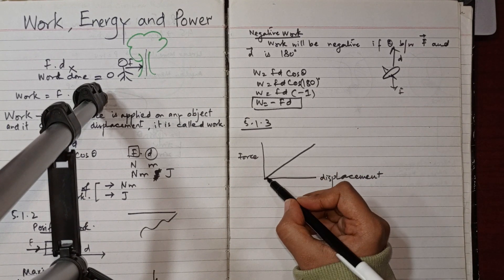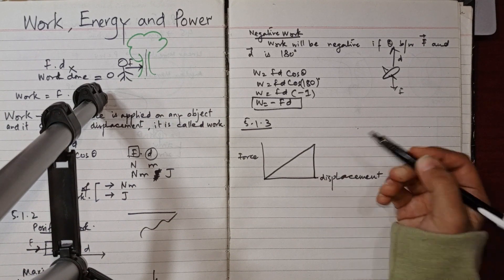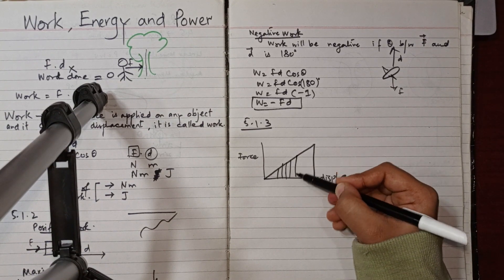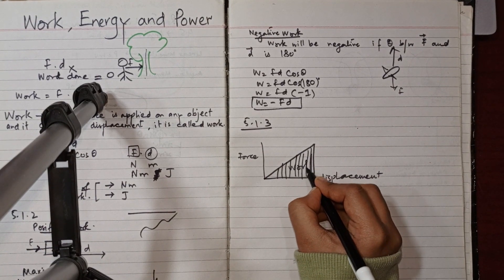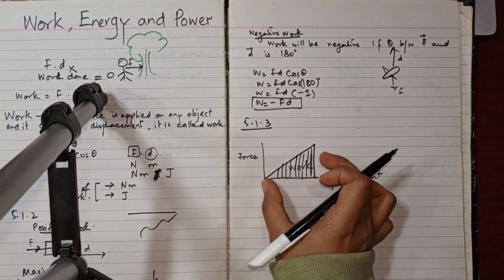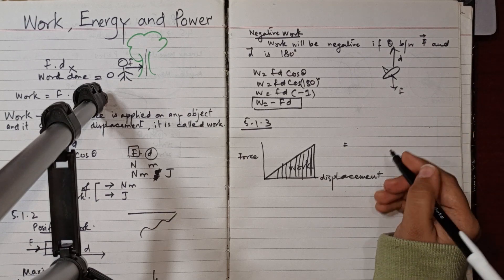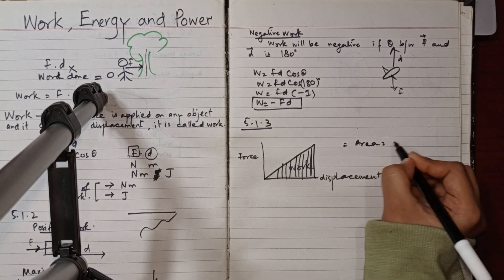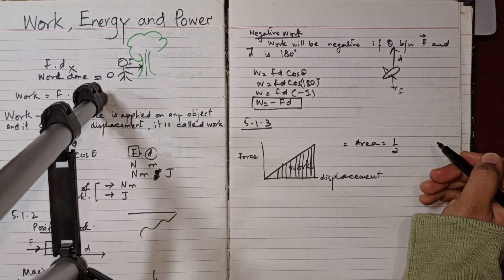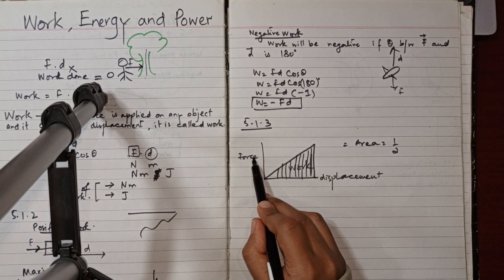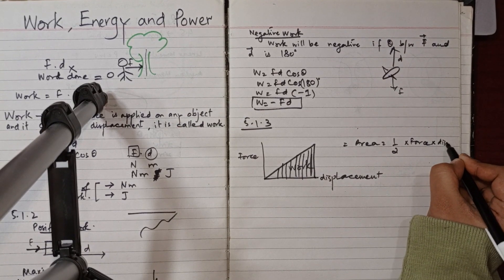For a constant force the graph forms a shape — whatever area is under the line is called work. If it's a triangle shape, work done = ½ × force × displacement. For a trapezium-type graph with force on the y-axis and displacement on the x-axis, we calculate the area under the graph.